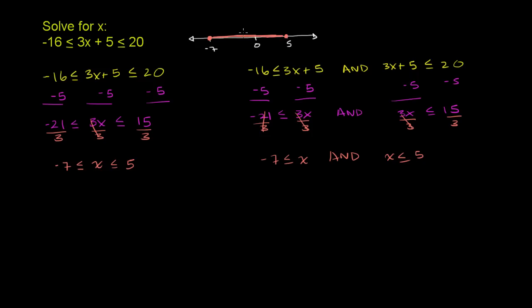We can verify that these values work. Try a number well inside the solution set, like 0. 3 times 0 is 0, so you're just left with 5. Negative 16 is less than or equal to 5, which is less than or equal to 20 — that's true, so x=0 works and makes sense.